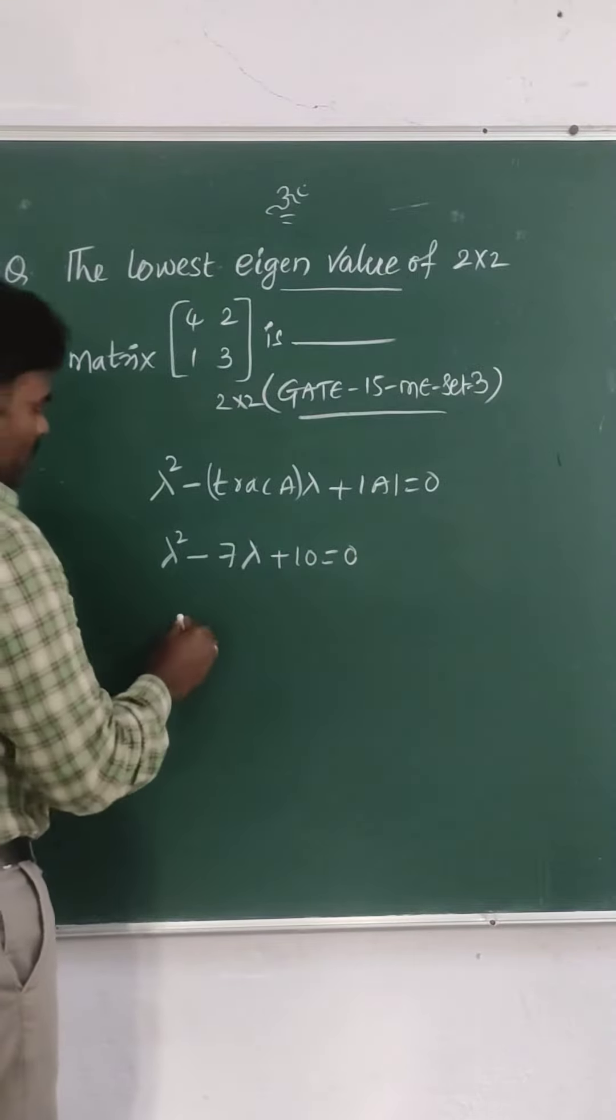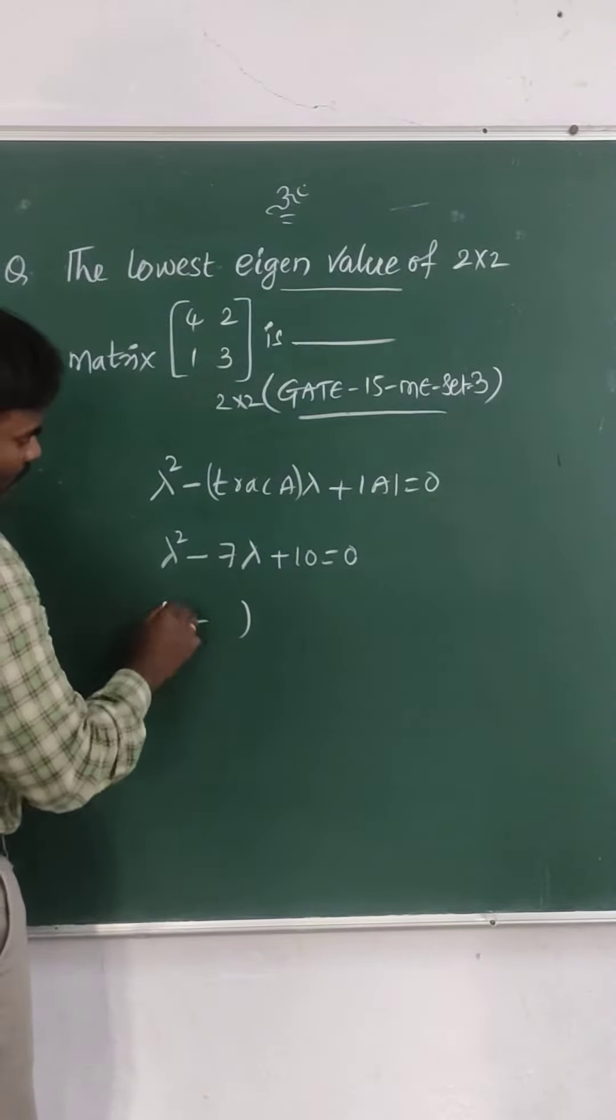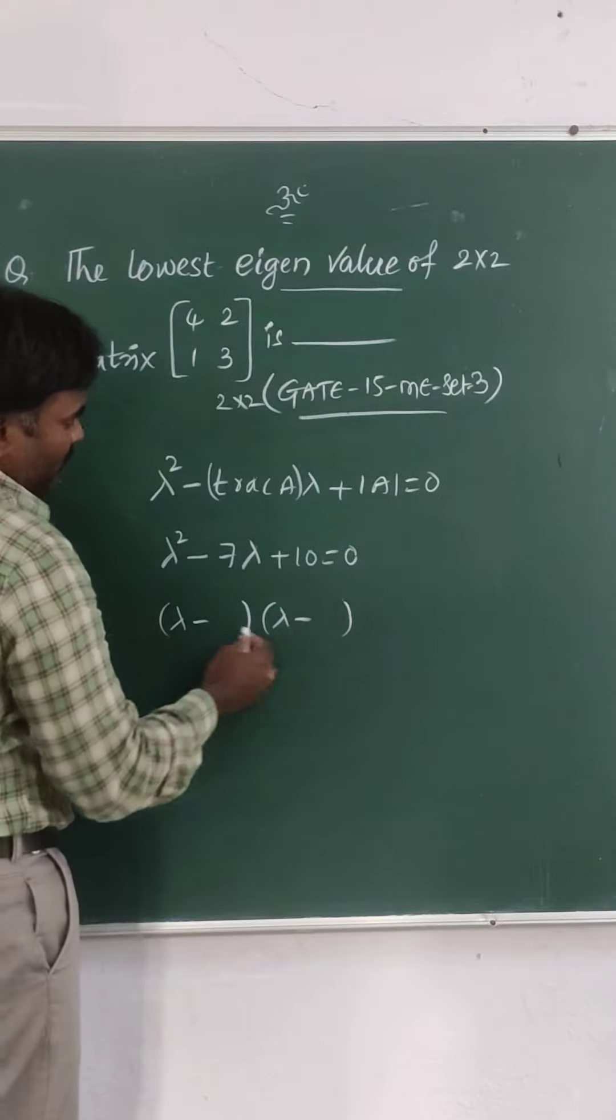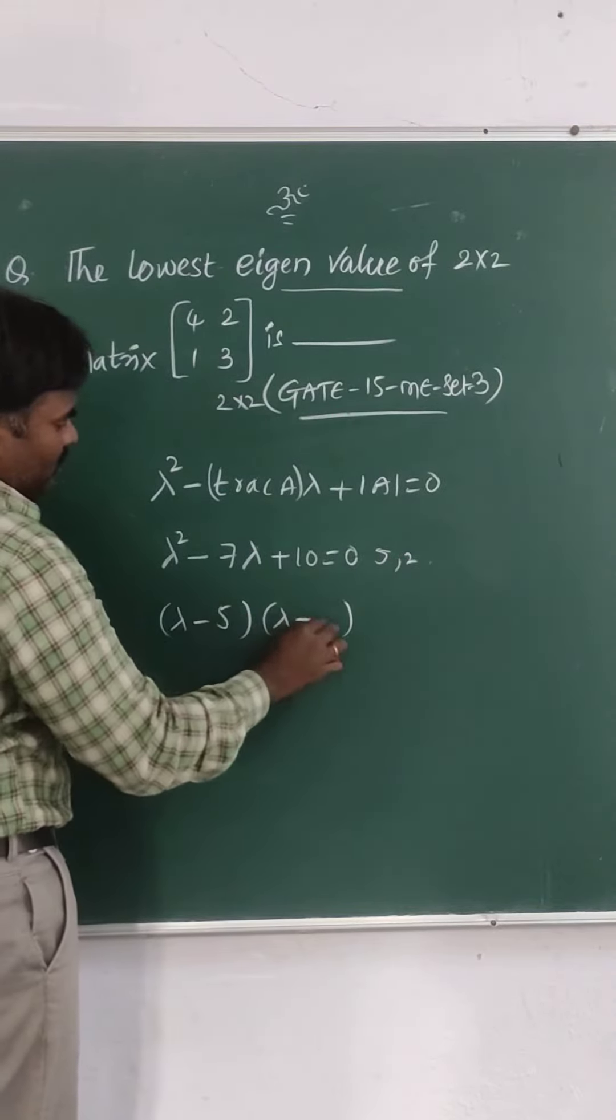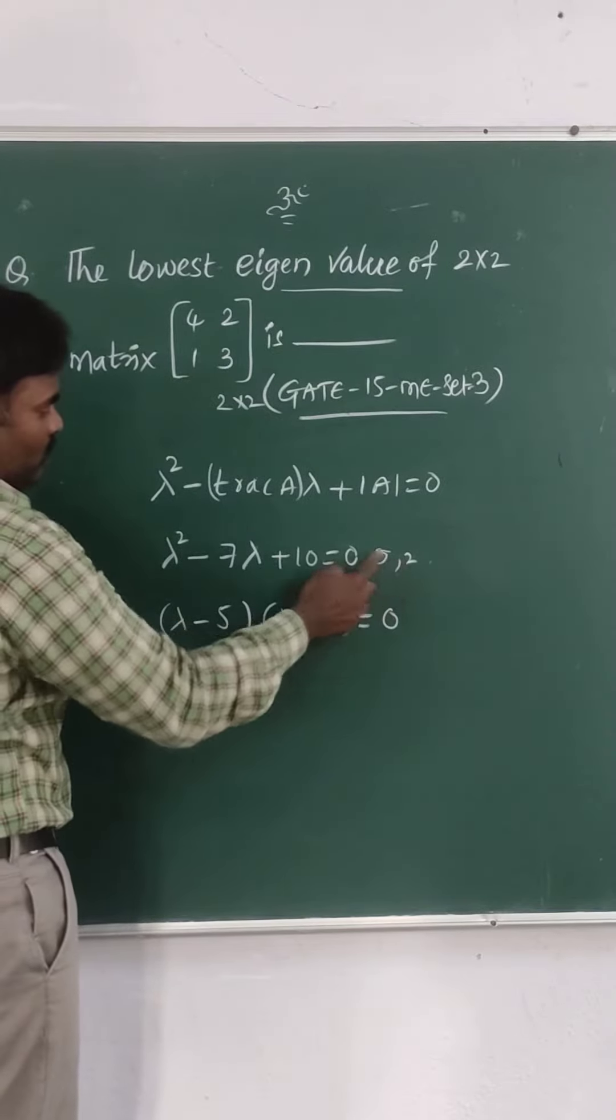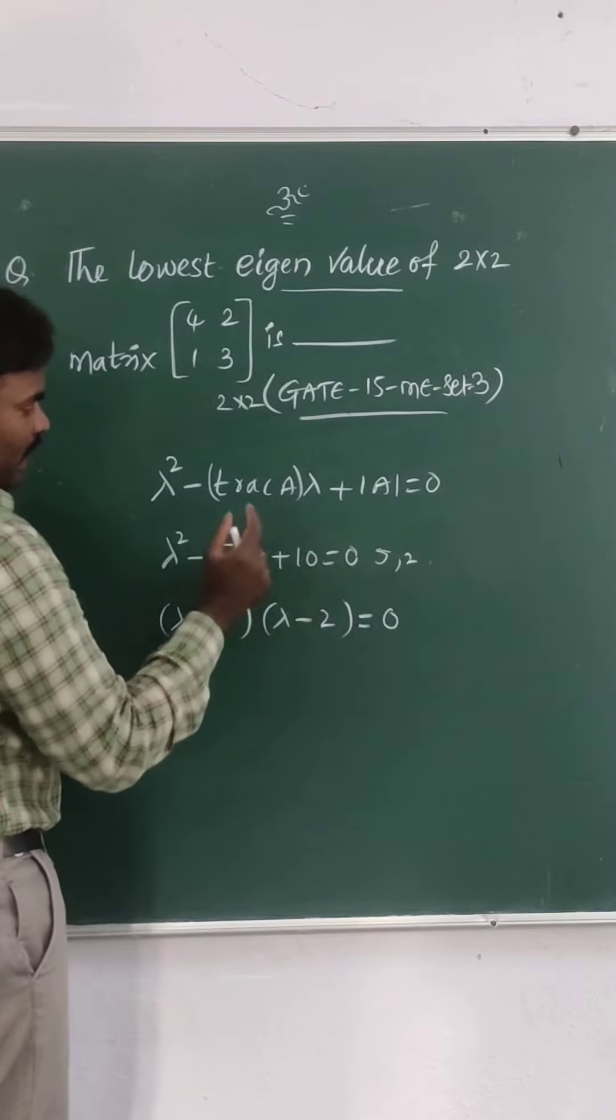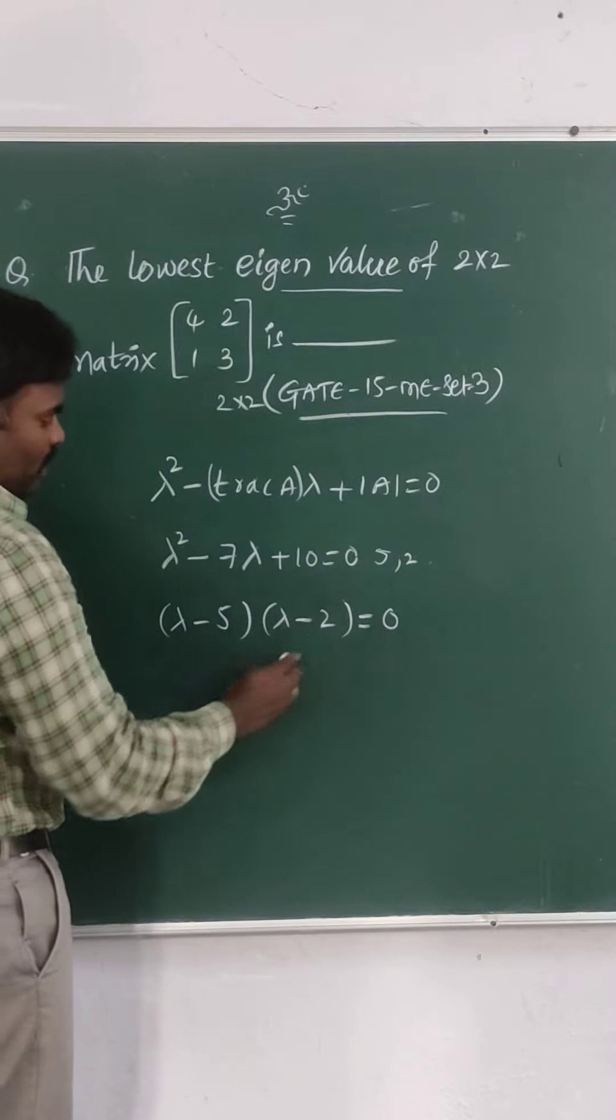Now, we have to simplify this. So friends, you see lambda minus of this and lambda minus of this. 10's roots are what? 5 comma 2. So, can I write like this? See, 5 plus 2 is 7, 5 twos are 10. So, lambda minus 5 into lambda minus 2 equal to 0.